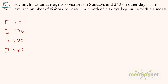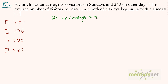Question number 3. A church has an average of 510 visitors on Sundays and 240 on other days. The average number of visitors per day in a month of 30 days beginning with a Sunday is — the month is 30 days and begins with a Sunday, so the number of Sundays is equal to 5.